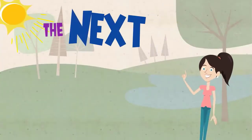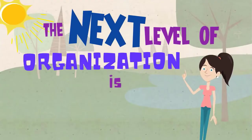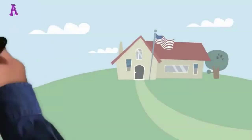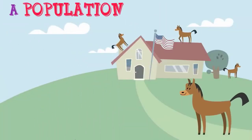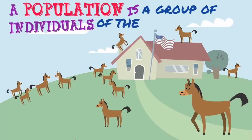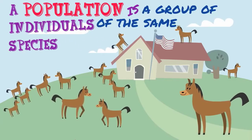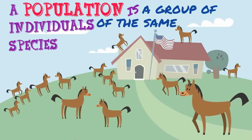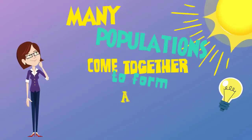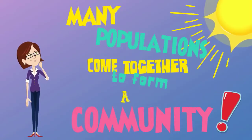The next level of organization is population. A population is a group of individuals of a given species that live in a specific geographic area at a given time. Note that populations include individuals of the same species.